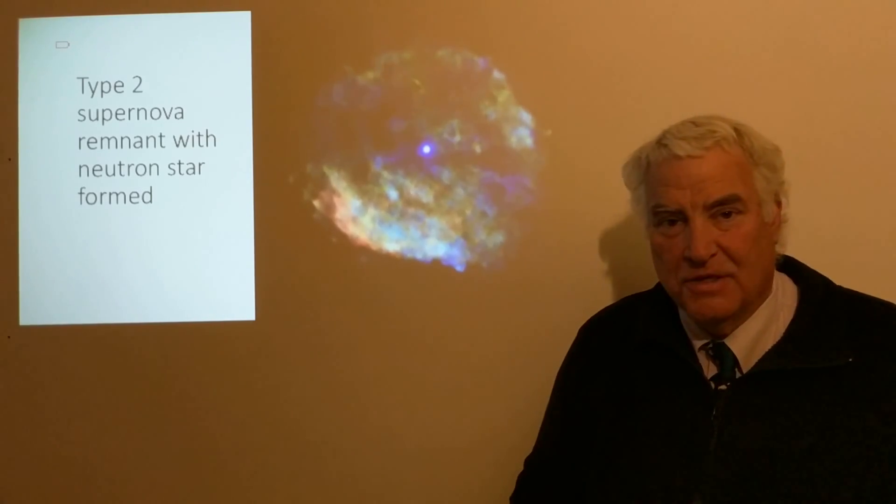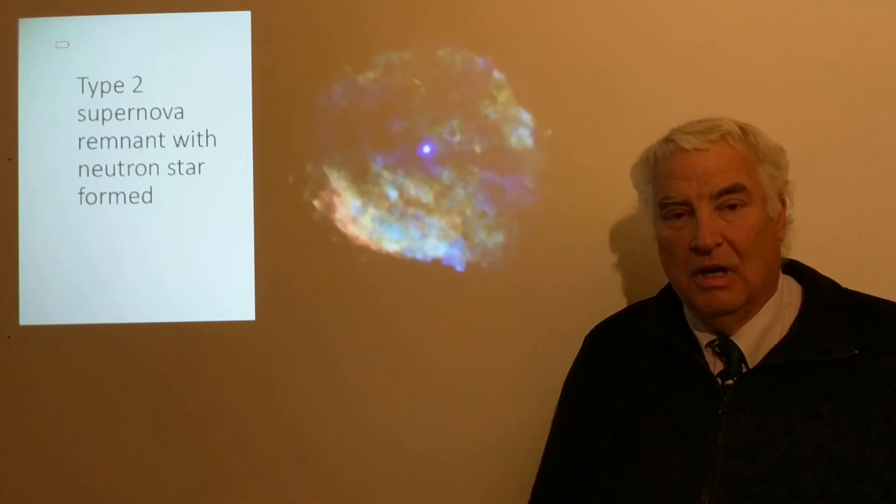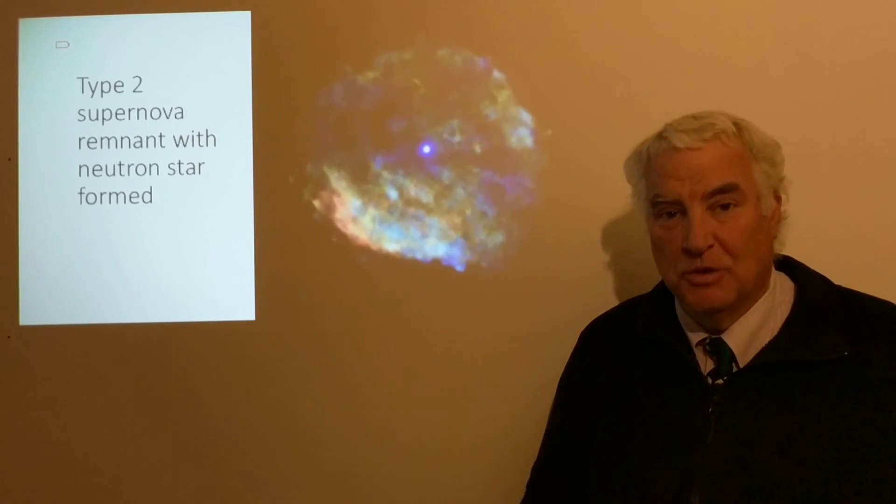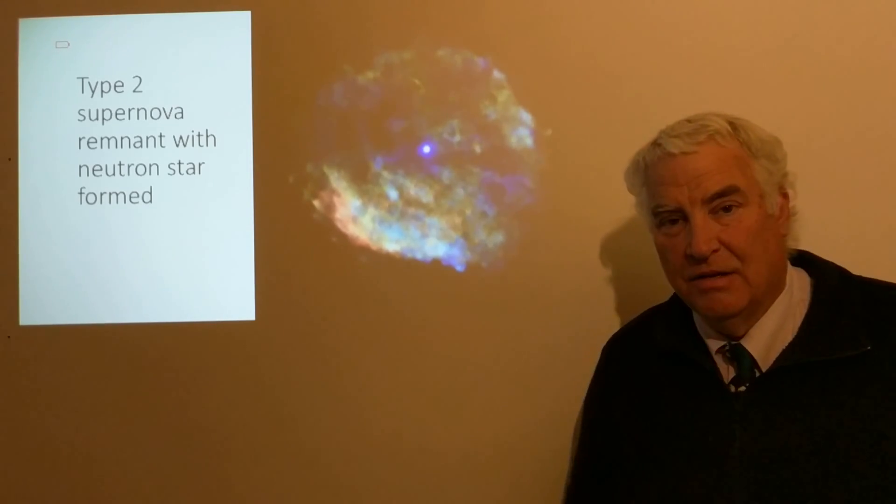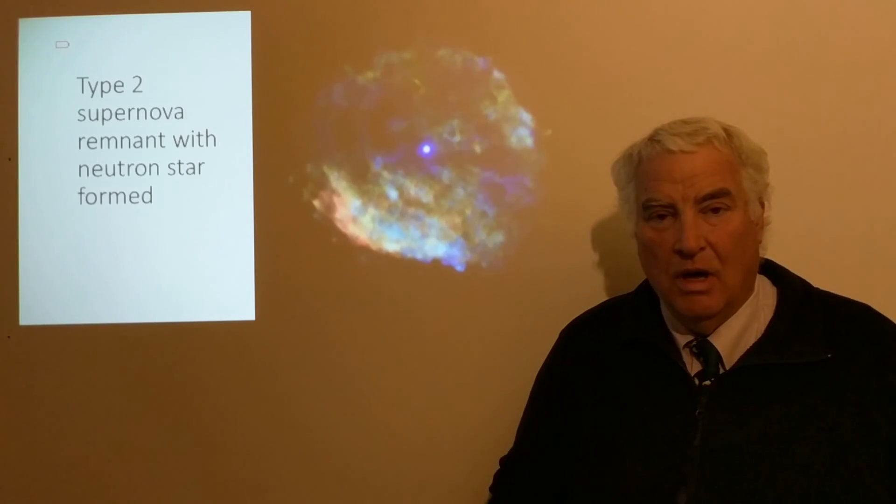All the stars above eight solar masses at formation will have a type 2 supernova, and the lower mass stars will, after having a supernova, leave a remnant that will be a neutron star.